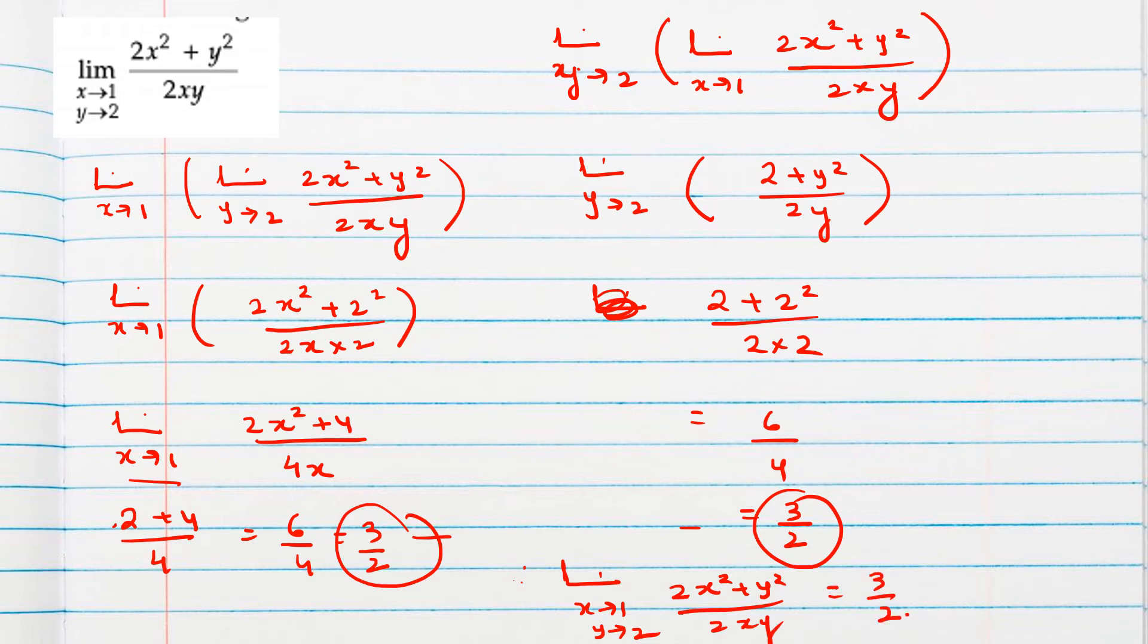There is a difference. If you find x tends to 0, y tends to 0, both variables tend to 0, then you have to find this limit, this limit, as well as by substituting y equals mx also. You need to test. Otherwise, if x and y tending to numbers other than 0, then finding these two limits will be enough. So our final answer is 3 by 2.